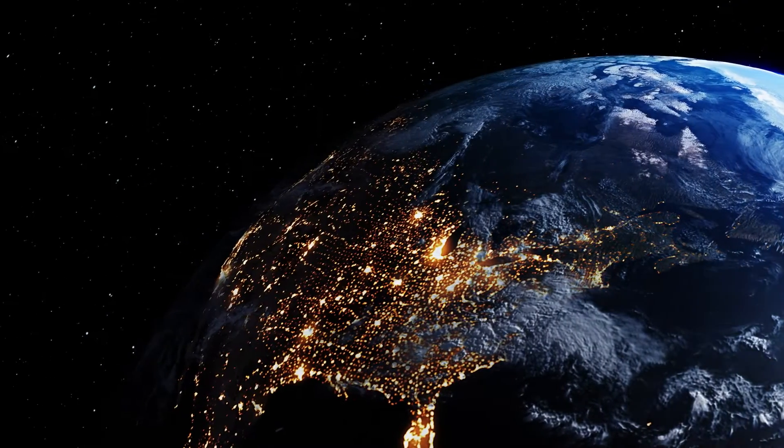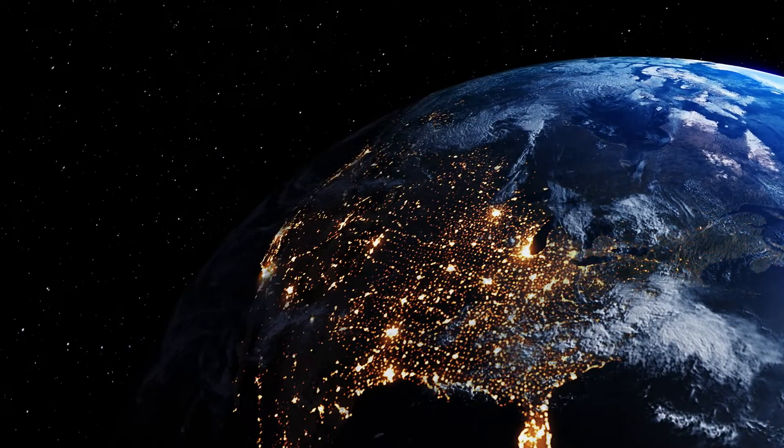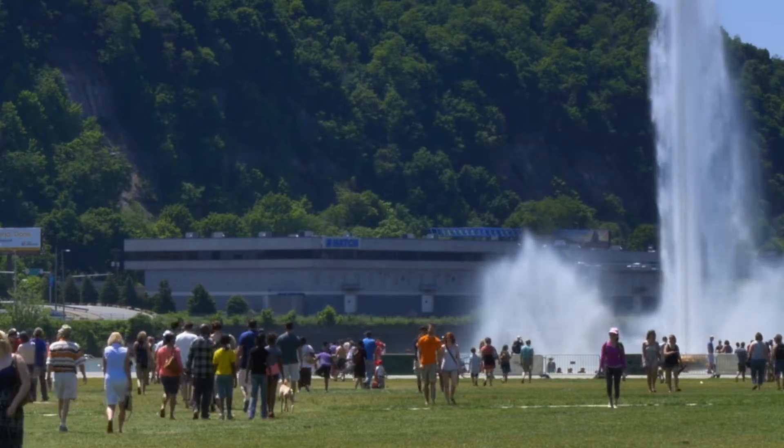Earth, the planet that we inhabit, has been around for more than 4.5 billion years. Life has existed for most of that time, and humans represent just a blink, just 2 million years.